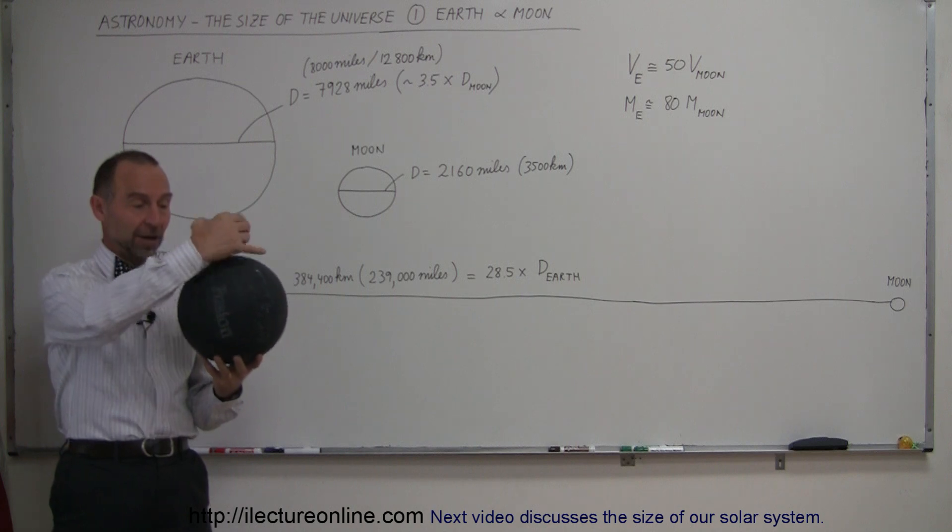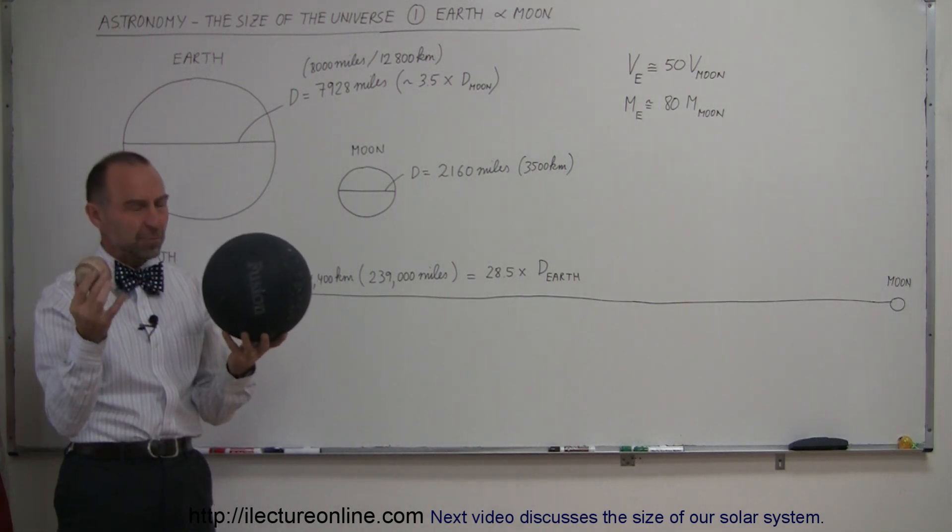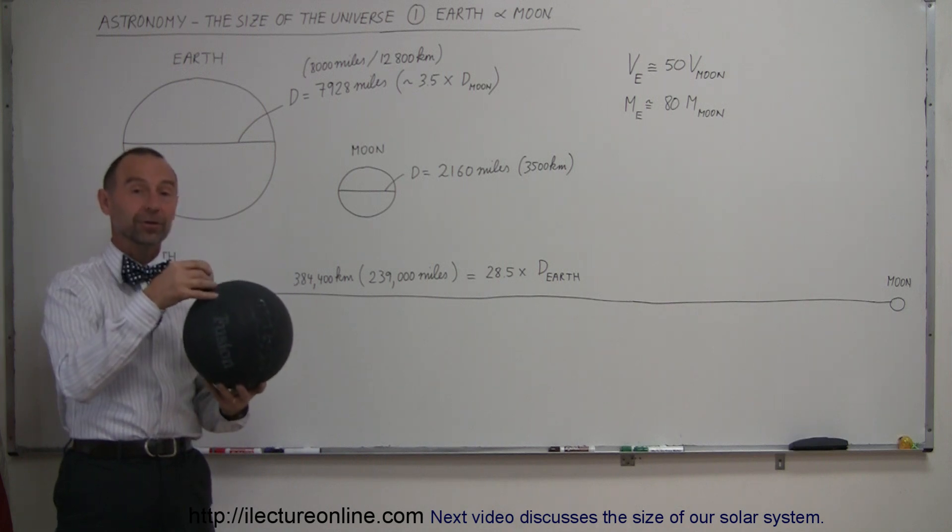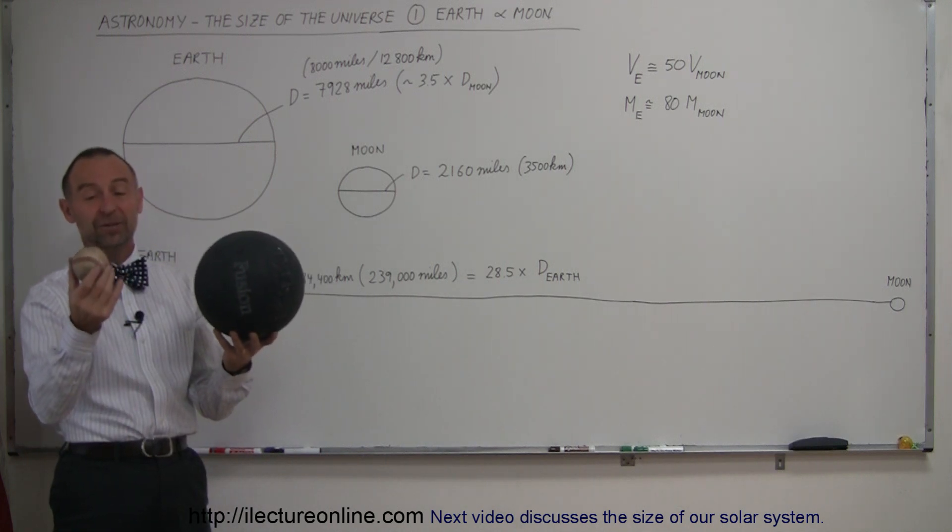Matter of fact, if you had a hollow Earth and wanted to fill it up with moons, you would need about 50 moons to fill up a single Earth. So, the Earth, volume-wise, is about 50 times as big as the Moon.